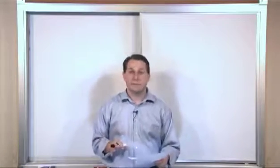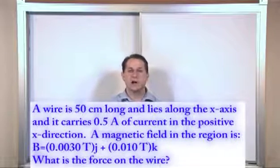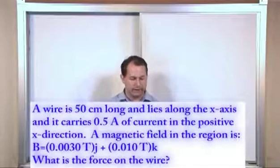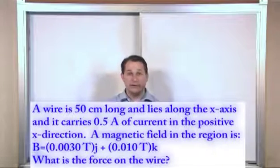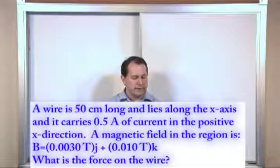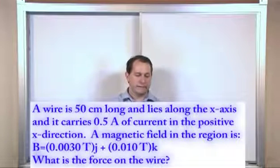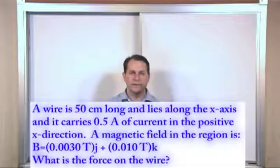So this problem goes as follows. A wire is 50 centimeters long and it lies along the x-axis. It carries 0.5 amps of current in the positive x direction. A magnetic field in the region here around the wire is 0.0030 teslas in the j direction plus 0.010 teslas in the k direction. What is the force on this wire?